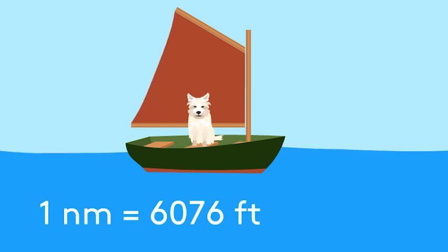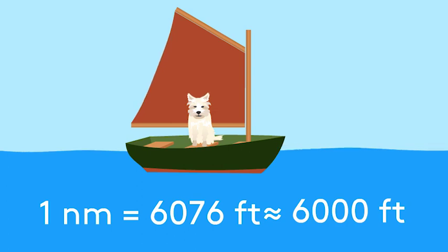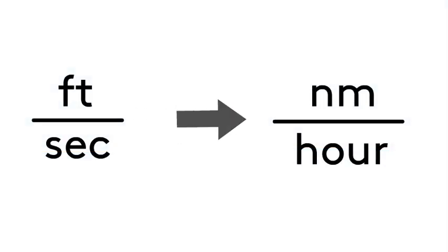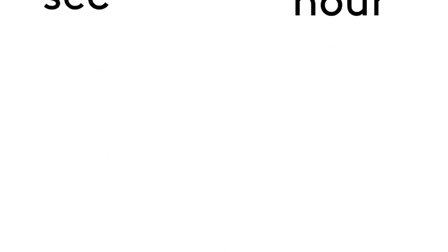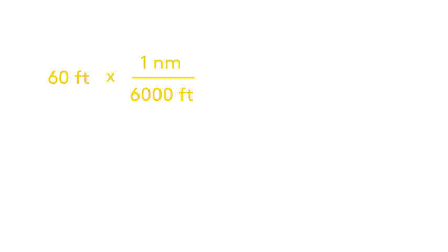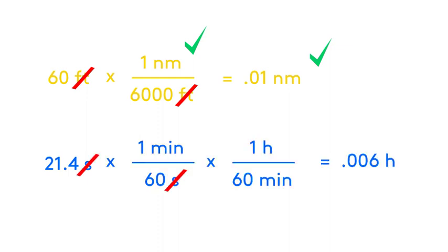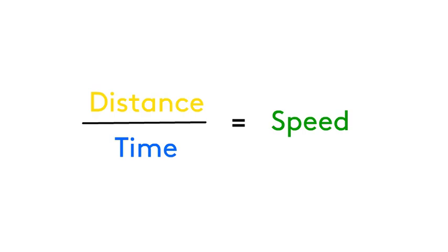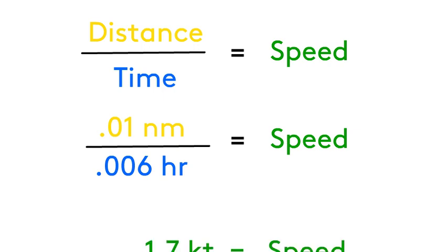You may have been wondering why we chose 60 feet for Bella to travel. Because 1 nautical mile is equal to 6,076 feet, or rounded to 6,000 feet, it makes for an easy conversion. We'll convert our data to the units we want by multiplying our values by fractions equal to 1. 60 feet multiplied by 1 nautical mile over 6,000 feet gives us 0.01 nautical miles. The seconds-to-hours calculation gives us 0.006 hours. Once we have our correct units, we can plug distance and time into the equation for speed and end up with 1.7 knots for Bella's speed.